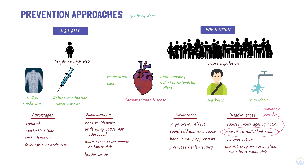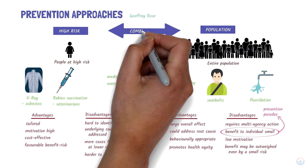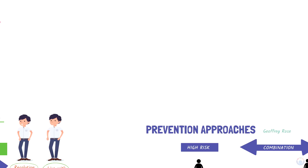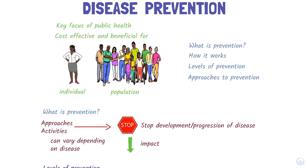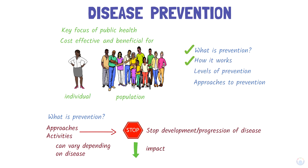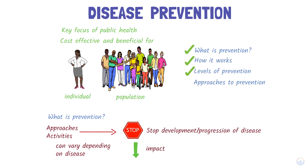There is no single approach that will work well in all situations, and in most cases, a combination of targeted and population-wide prevention works best. And that's a quick look at prevention — what it is and how it works, the different levels of prevention, and two approaches to prevention.